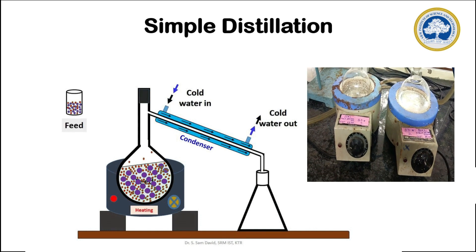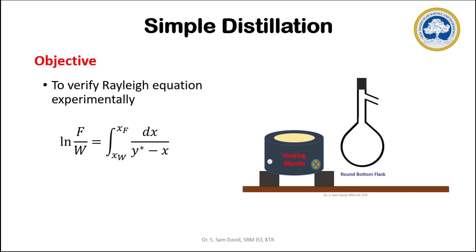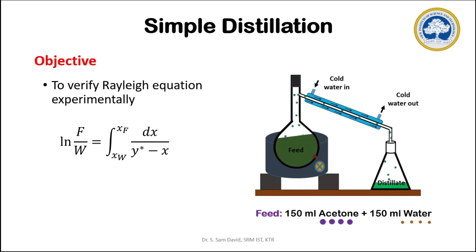The remaining feed solution in the round bottom flask is called as residue. In the mass transfer laboratory experiment, the objective of the simple distillation process is to verify the Rayleigh equation experimentally. With respect to the distillation process, the Rayleigh equation relates the total number of moles of feed and residue in the process with the vapor-liquid equilibrium data.